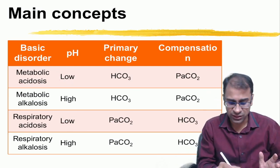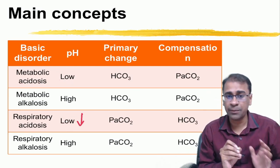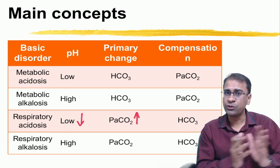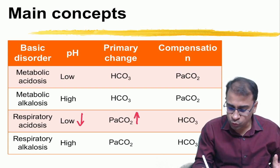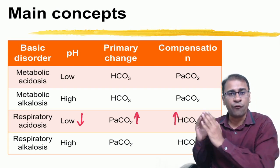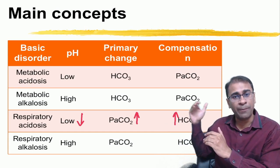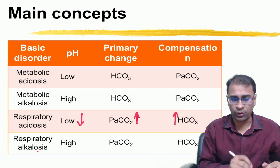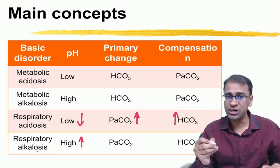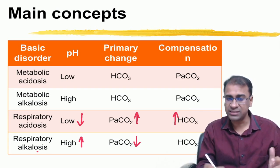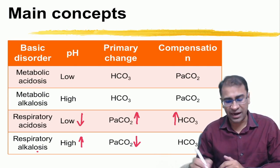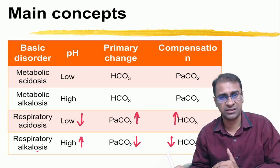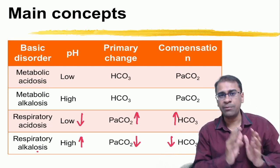In respiratory acidosis, pH decreases and PCO2 has increased, so bicarb should also increase to compensate — we call this respiratory acidosis with a metabolic compensatory component. Conversely, in respiratory alkalosis, pH has increased and PCO2 has decreased; to compensate, bicarb will decrease, bringing pH back toward normal. This is how the same direction rule applies across all four primary disorders.